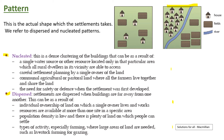Dispersed settlements: the buildings are far away from each other, normally surrounded by the fields or cultivated lands they're working on. Those lands are typically owned by the person living on them — they live and work in the same place, and all resources are available to them there. The activities involve large areas of land being farmed, often for livestock. Dispersed is what we call isolated; nucleated is clustered.